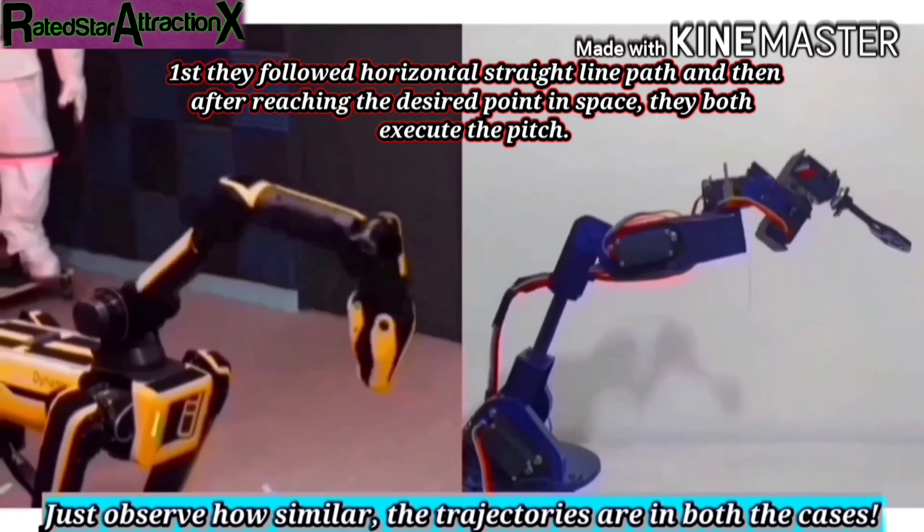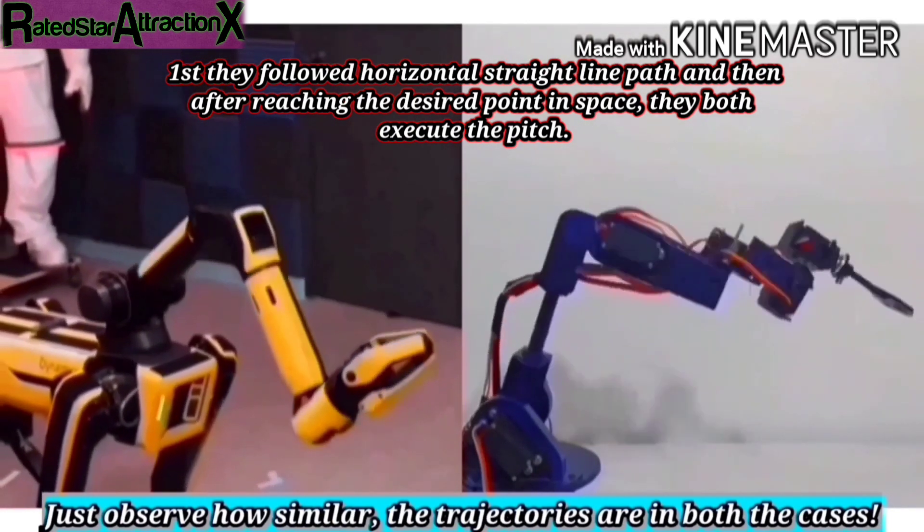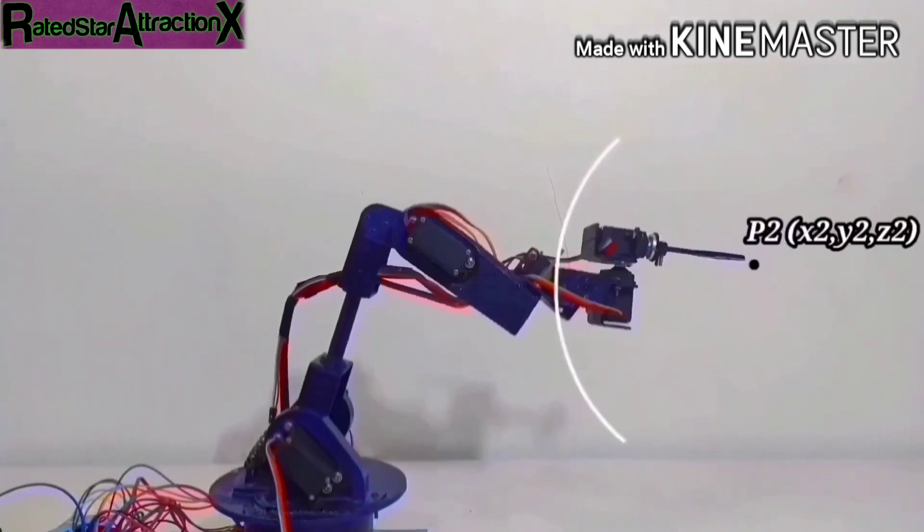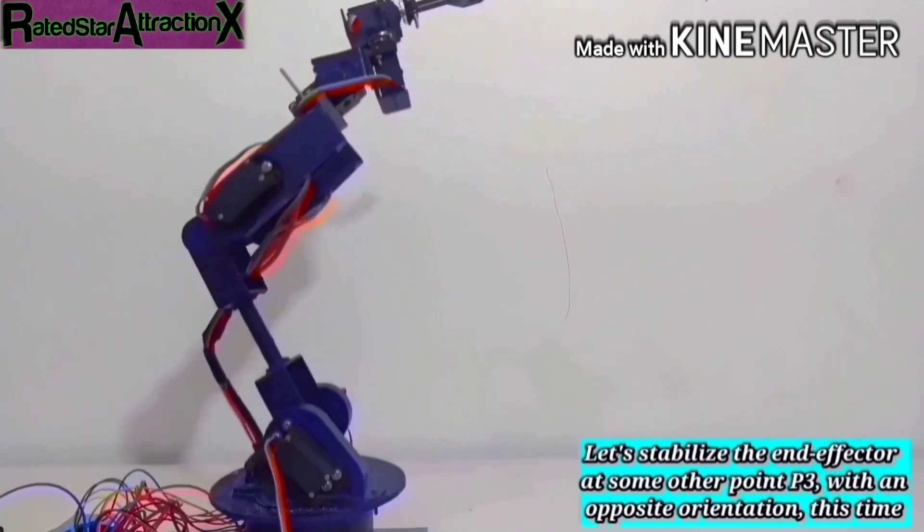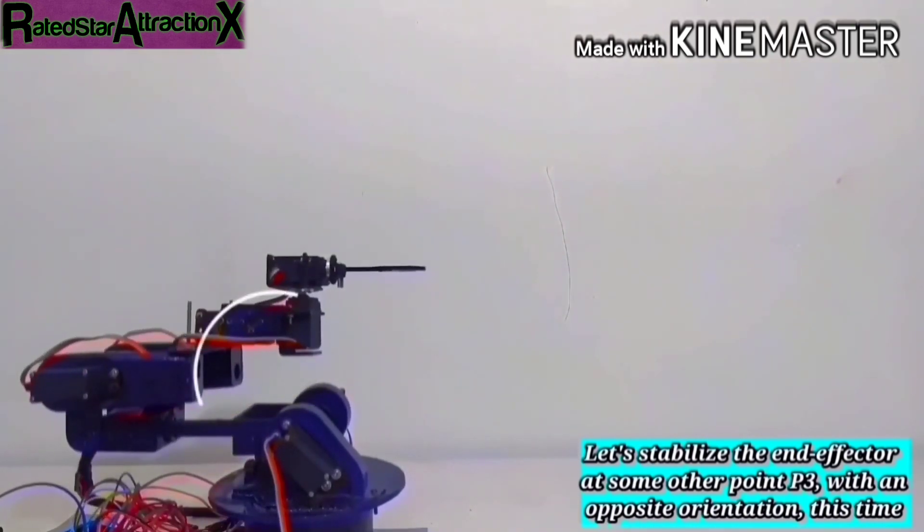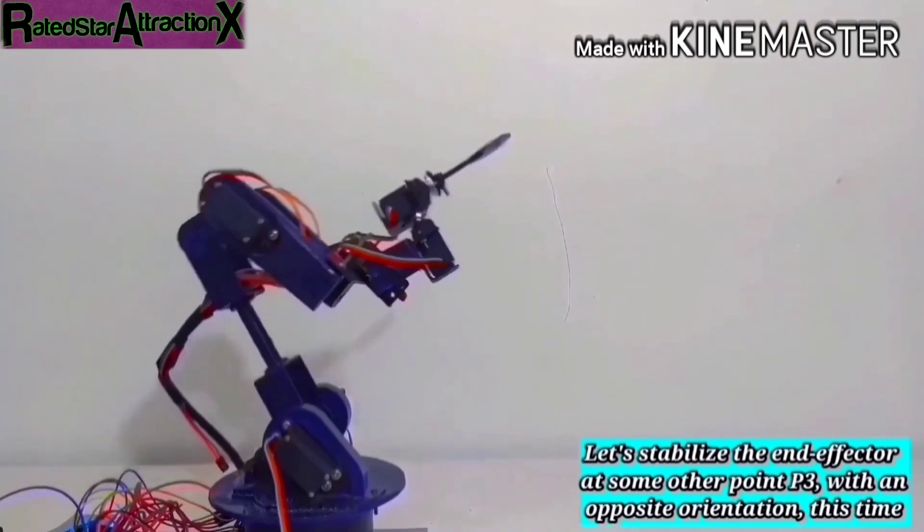Just closely look at both of them and observe the similarities in their trajectories. Now let's stabilize the end effector at some other point, but this time with the opposite initial orientation. Just to give you more detail, I have frozen the time here.